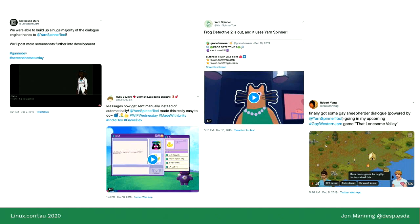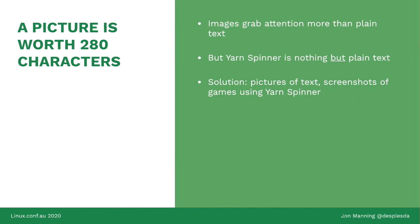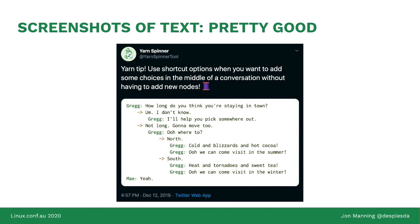To that end, any time people say 'I made this with Yarnspinner and it's great,' I retweet them, I boost them, and it helps people discover new stuff. Images grab more attention than text in a wide variety of places, but the problem is Yarnspinner is largely text. Our solution has been to post pictures of text and screenshots of games that use Yarnspinner. To that end, we've been doing things like writing a really pretty syntax highlighter, which allows us to demonstrate language features and promote what you can do with Yarnspinner.